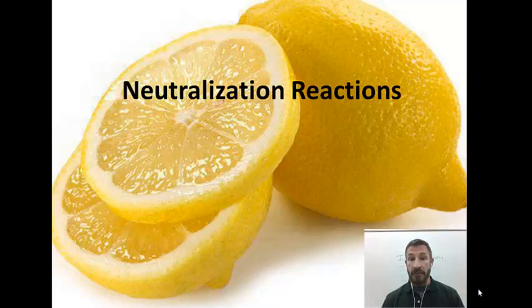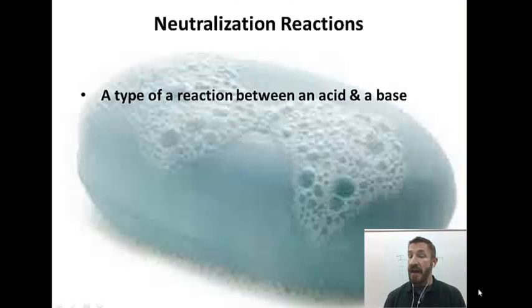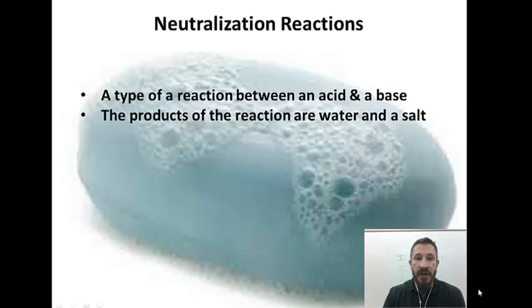You see here I have a lemon. A lemon is a type of acid. A neutralization reaction is a reaction between an acid and a base. So, three things about neutralization reactions. One of them I just said, it's a reaction between an acid and base. On the first slide I had an acid. I showed you a lemon. On this slide I have a base. Soap is also a base. The products of the reaction are water and a salt.